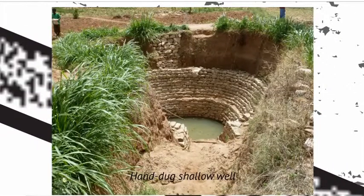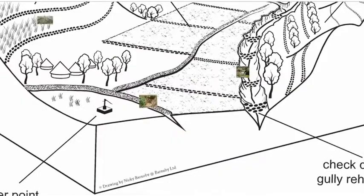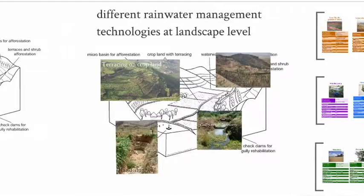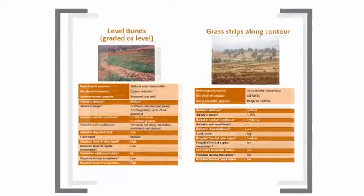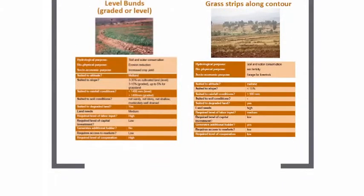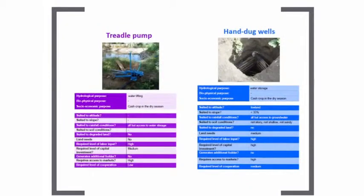In order to support the development of integrated strategies, the NBDC has developed a set of cards summarising the major technologies or management practices that might be used. These cards show the main purpose of the technology and what it can achieve in hydrological, biophysical, and socio-economic terms.